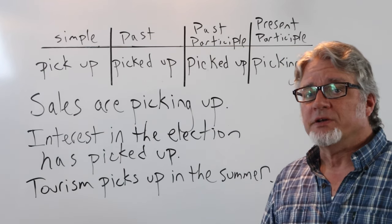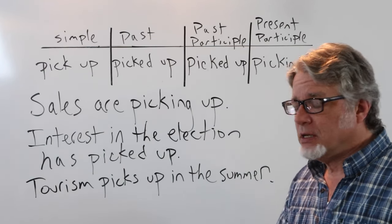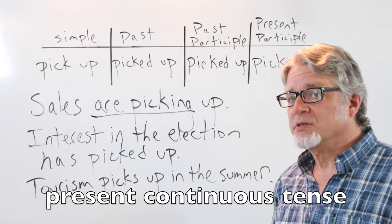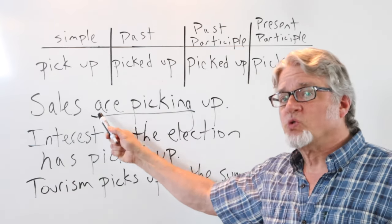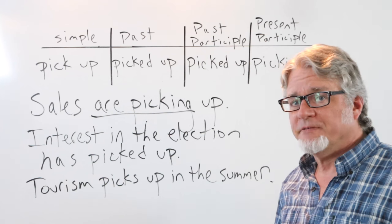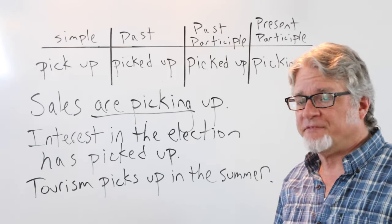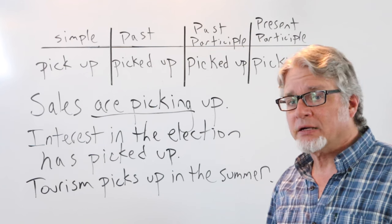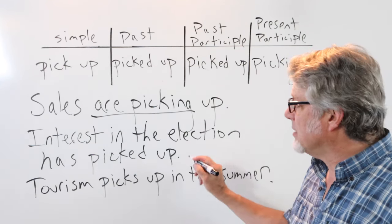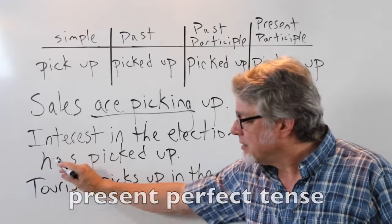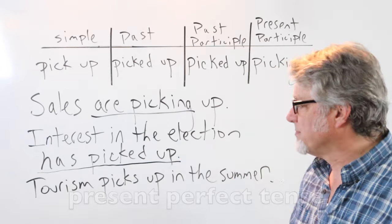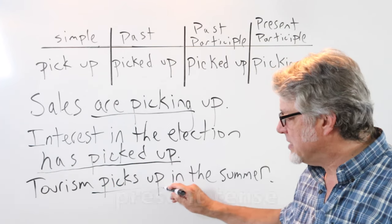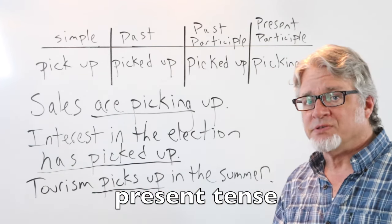Use pick up when there's an increase in activity. Sales are picking up. This is in the present continuous tense. This would be an increase in some sort of retail or store activity. People are shopping more often and so sales are picking up. Interest in the election has picked up. As more people pay attention, the interest picks up. This is in the present perfect tense. Tourism picks up in the summer. There's more tourist activity. It almost always happens in the summer.